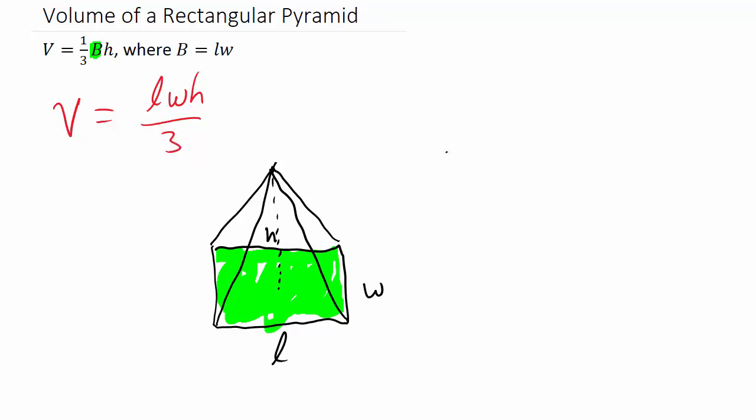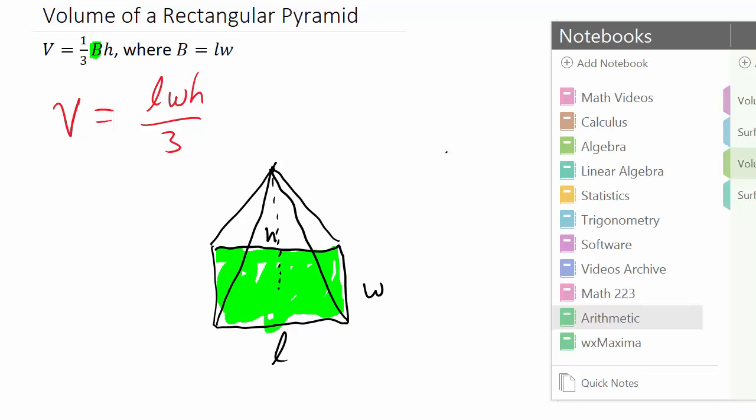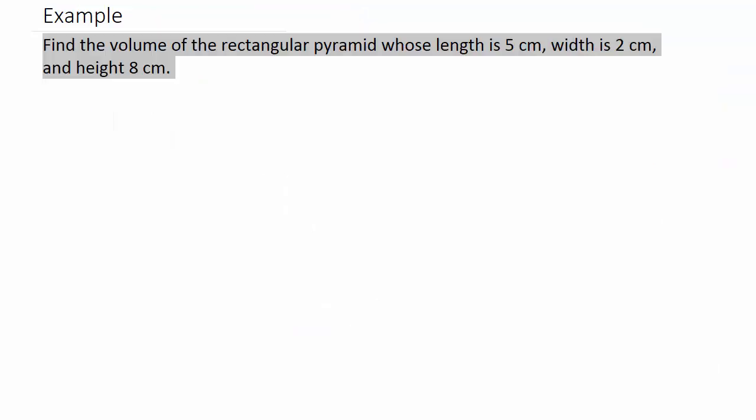Alright, so let's go ahead and take a look at our example. So it says find the volume of the rectangular pyramid whose length is five centimeters, width is two centimeters, and height eight centimeters.